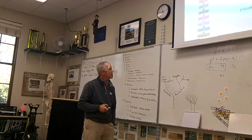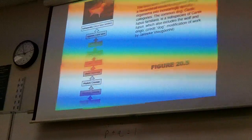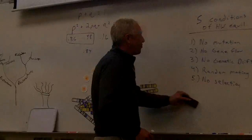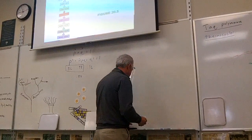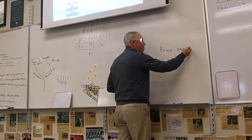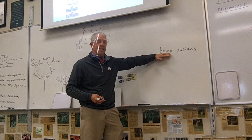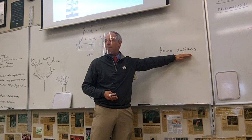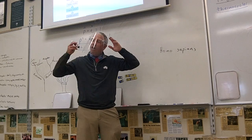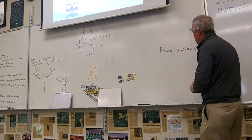This shows the taxonomic classification system, introduced by Carolus Linnaeus. He came up with binomial nomenclature, where every species gets two names — always in Latin. The first name is the genus, the second is the specific epithet. We're genus Homo — large-brained primates that walk upright. There are other Homo species that went extinct.